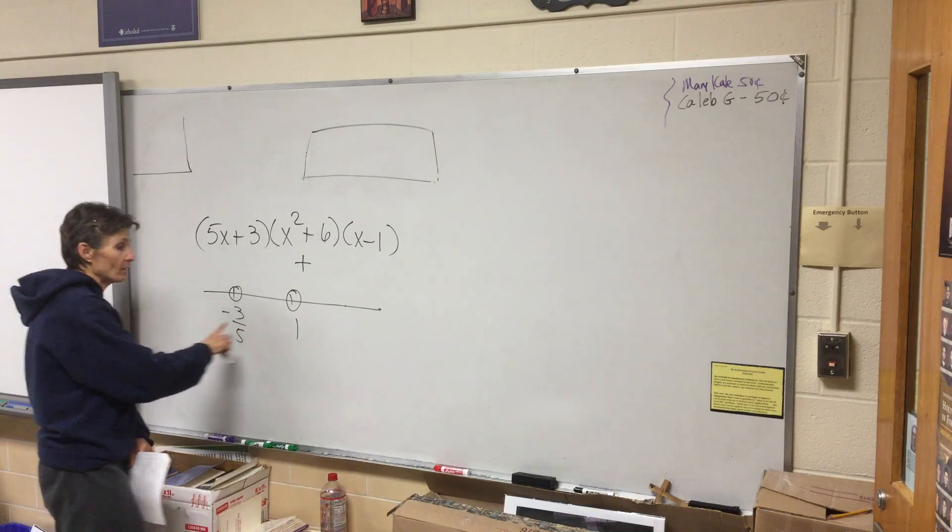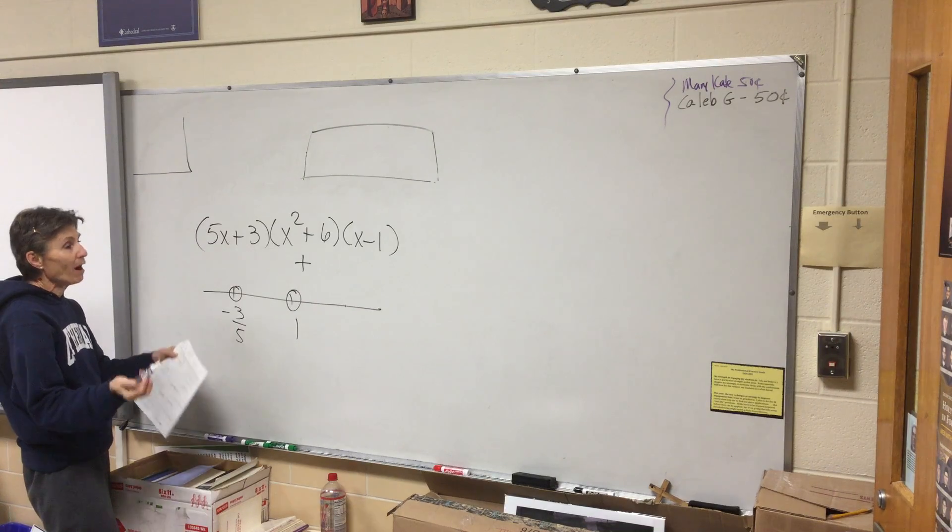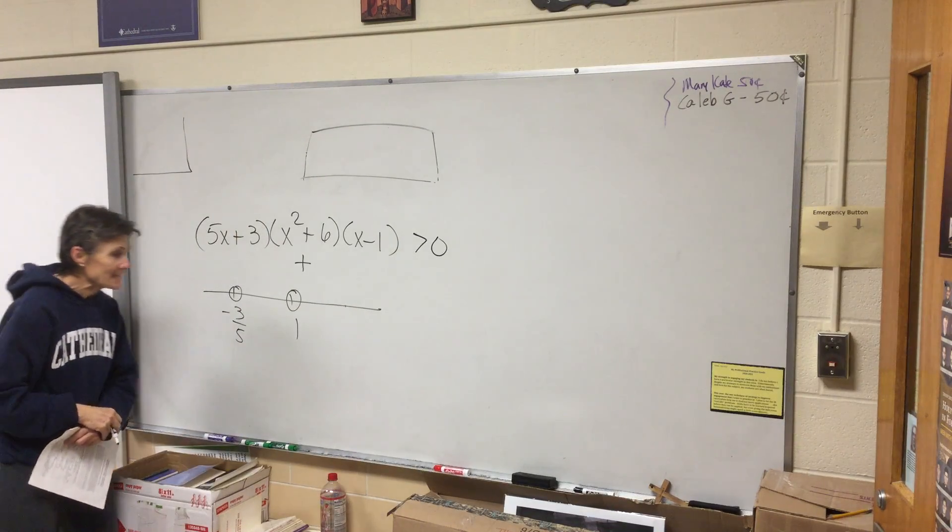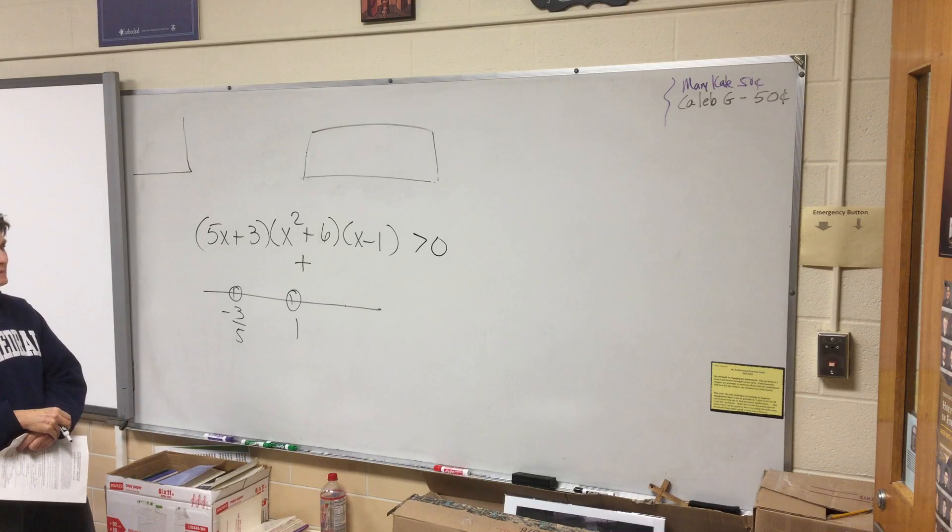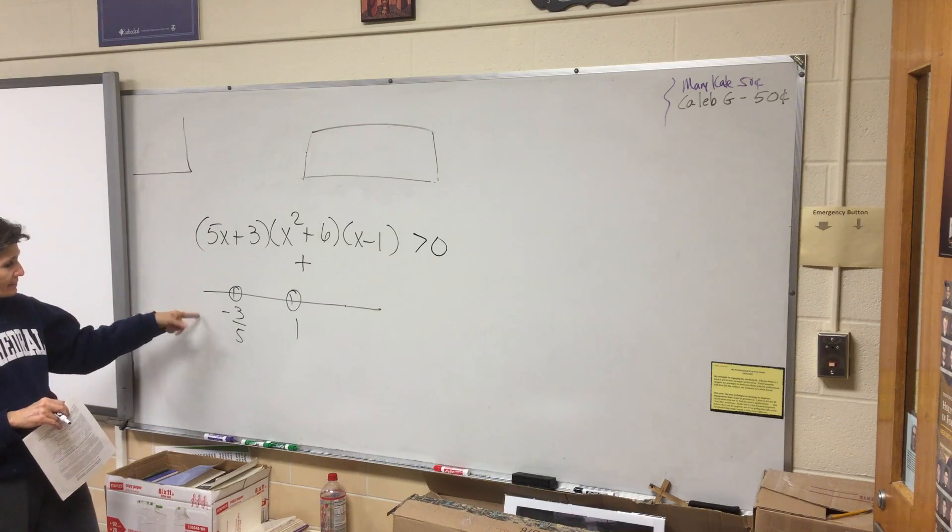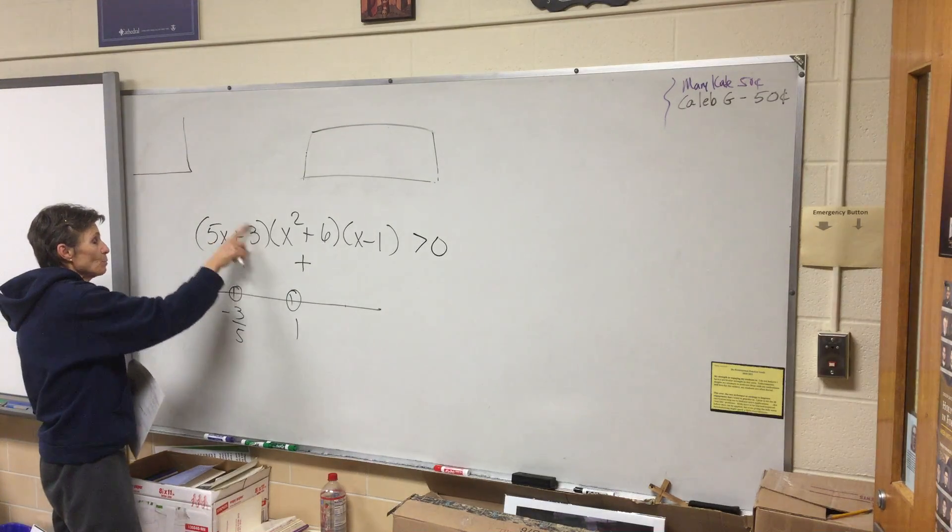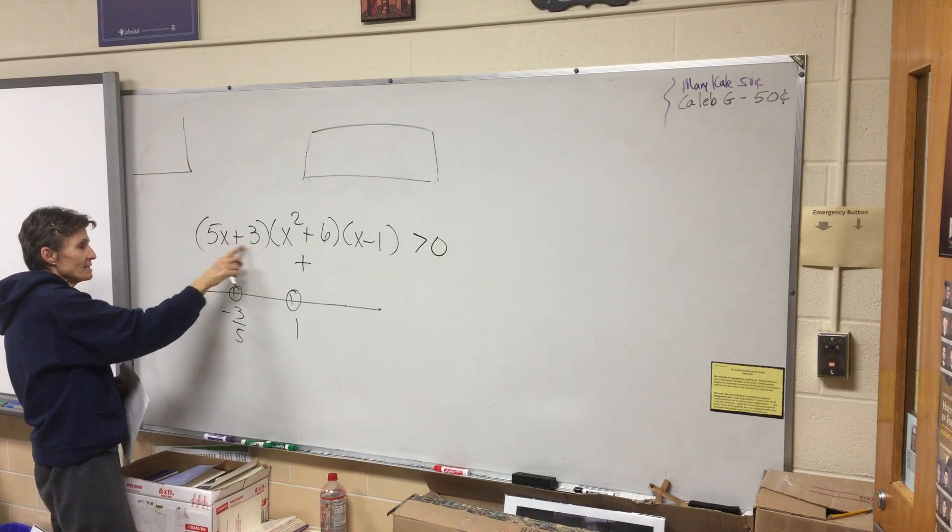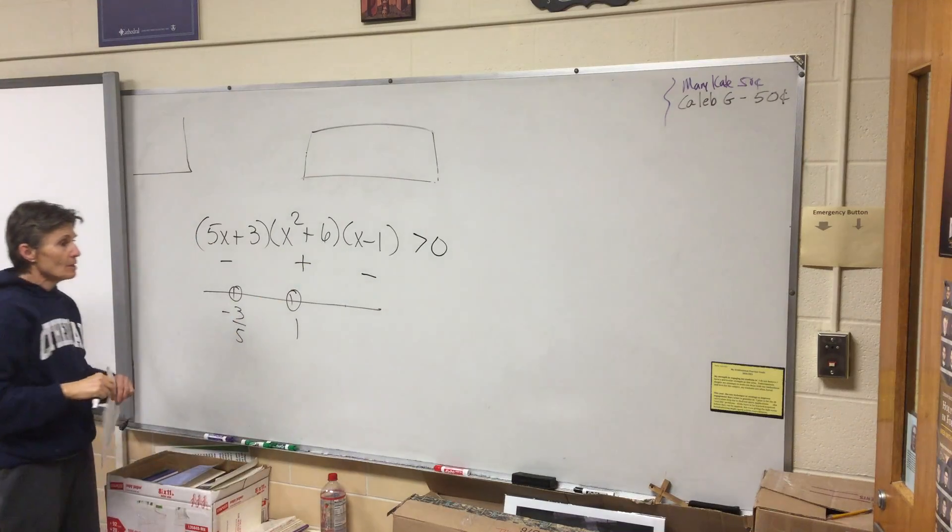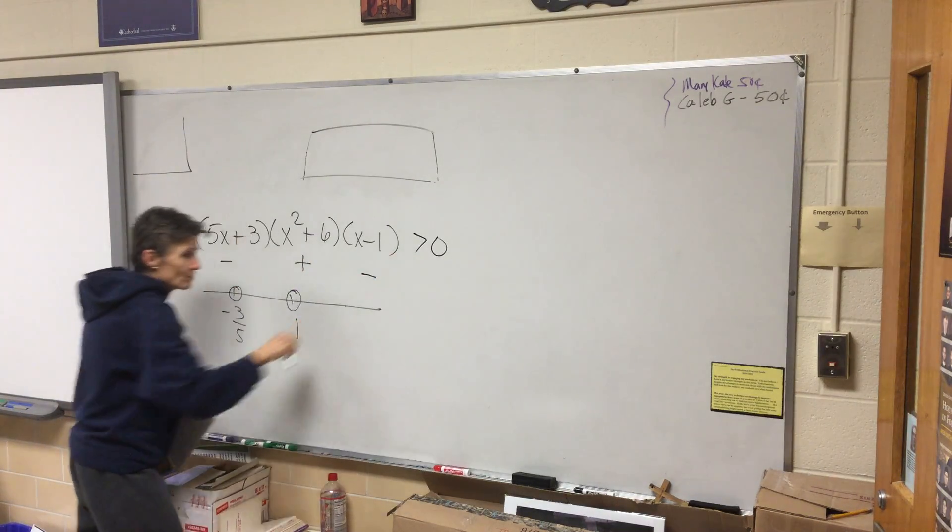So basically what I'm trying to do is figure out where am I going to shade this number line. The first part of the question says where is it positive. So let's just suppose it's positive and start picking numbers to see where it comes out positive. If I pick negative one, then this would be a negative parentheses, that of course is positive, and this would be negative.